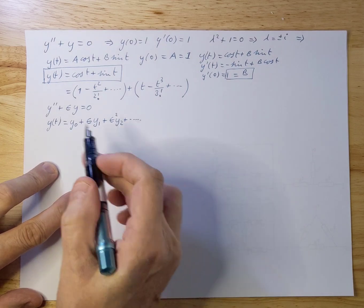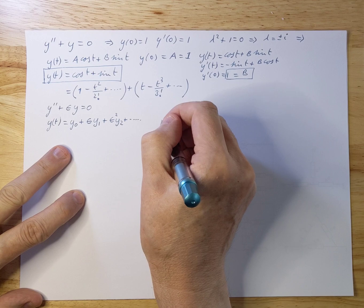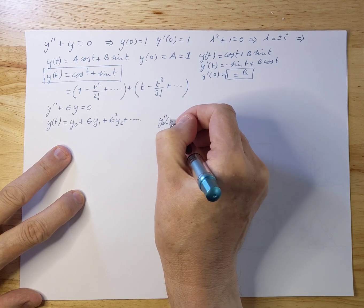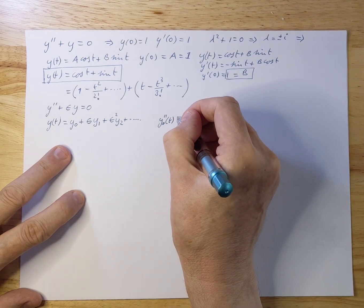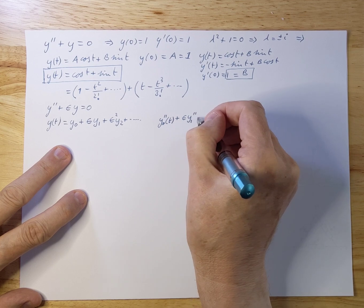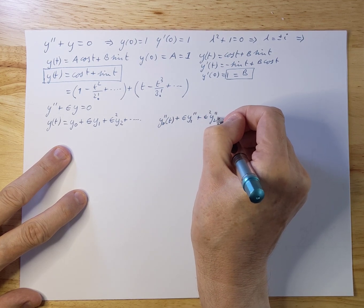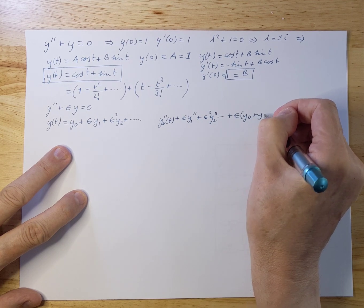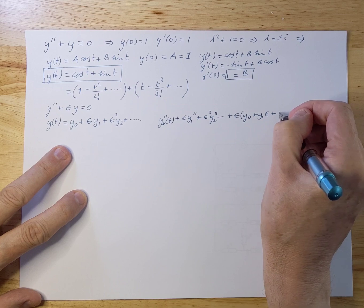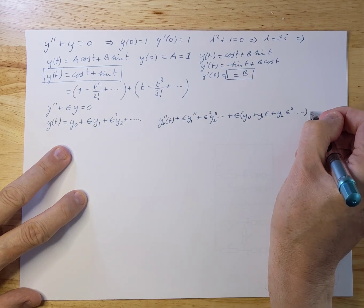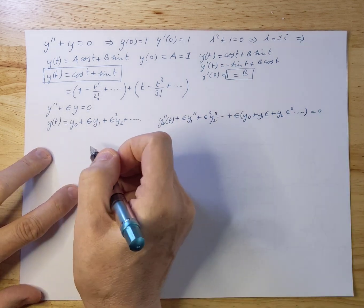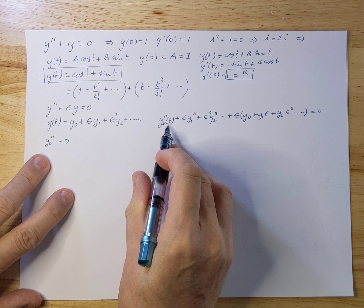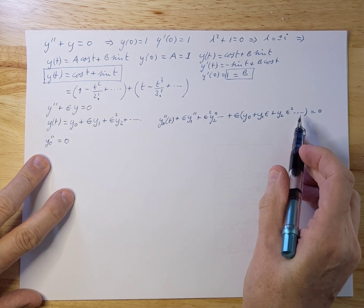So why don't we fill this one out and put it in here and see what happens. So we will do that. And then we will see that we will get y₀ double plus epsilon y₁ double plus epsilon squared y₂ double, etc., plus epsilon times y, which is y₀, plus y₁ times epsilon, plus y₂ times epsilon squared, etc. And that needs to be 0. So now let's collect the epsilon terms. So we get first y₀ double equals 0. That's our first equation here, because all the epsilon powers need to be 0.